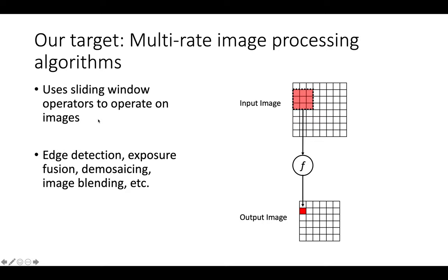Just to clarify what a multi-rate image processing algorithm is: it's an algorithm that's built out of sliding window operations. So it's a directed acyclic graph of sliding window ops where a sliding window operation takes in an input image like the one shown here, and it has some fixed size kernel like a 3x3 blur or maybe some sort of point-wise operation.